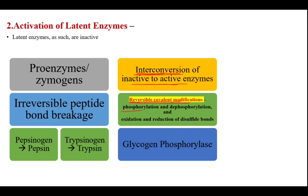Another method of activation of latent enzymes is the interconversion of inactive to active enzymes by reversible covalent modification. Phosphorylation and dephosphorylation, and oxidation and reduction of disulfide bonds, are some examples of reversible covalent modification. For example, glycogen phosphorylase is the active enzyme in glycogenolysis, which undergoes phosphorylation and dephosphorylation for its activation and inhibition.